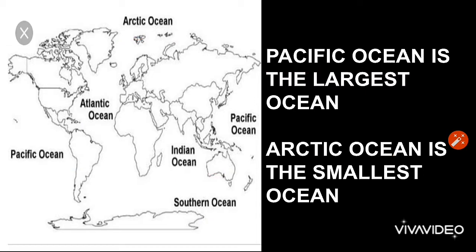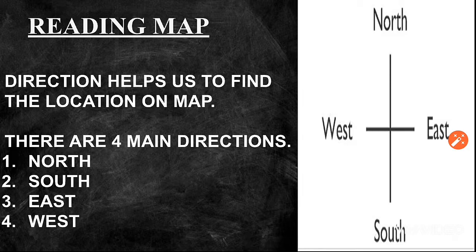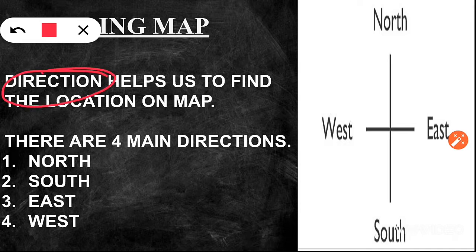Now, let us read about reading of the map and direction. A map tells us about the location of different places. We can find the location of different places on the map with the help of direction. There are four main directions. They are North, South, West and East.